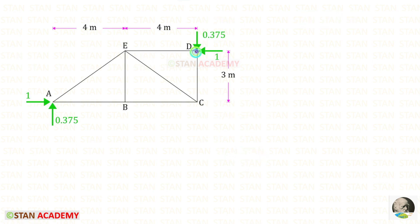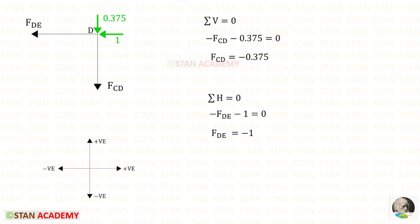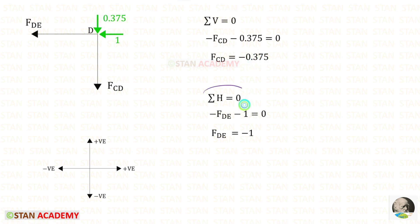Taking joint D in the unit load case: applying Sigma V = 0, both V_D and the relevant force act downwards (both negative). For F_DE we get −1.